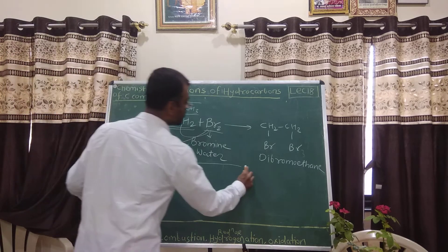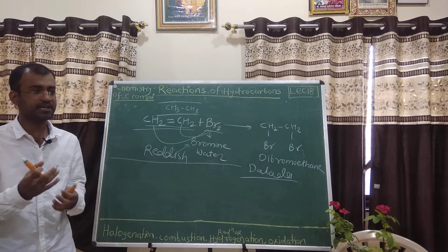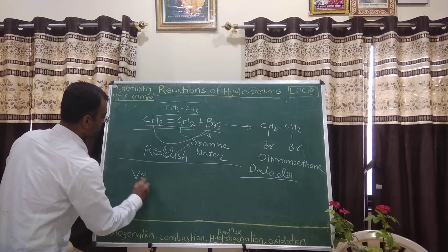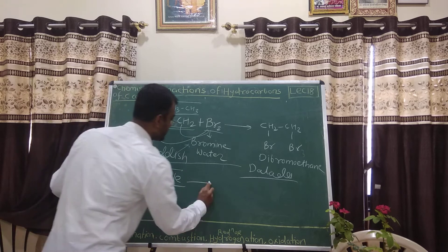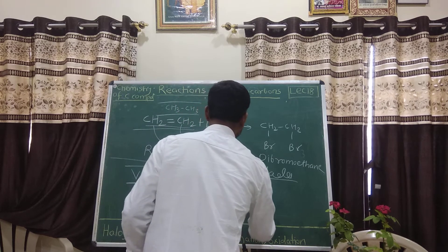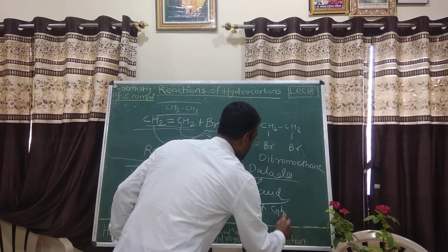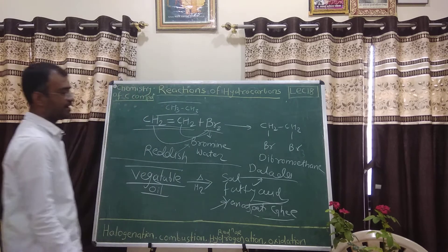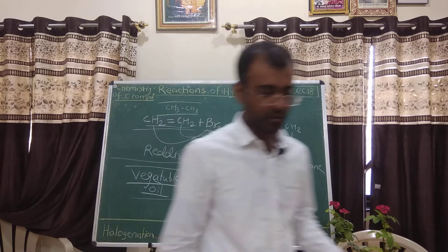One more interesting reaction: all of you must have heard of dalda or vanaspati ghee. What is vanaspati ghee? When we hydrogenate vegetable oil and saturate it, the product we get is called dalda. Vegetable oils are unsaturated fatty acids. When we heat them and do hydrogenation, the saturated fatty acids we get are called dalda or vanaspati ghee. We can also use the bromine test to distinguish butter and oil. Vanaspati ghee or dalda is not that good for health, whereas vegetable oils are very good for health. This was all about bromination of alkenes.